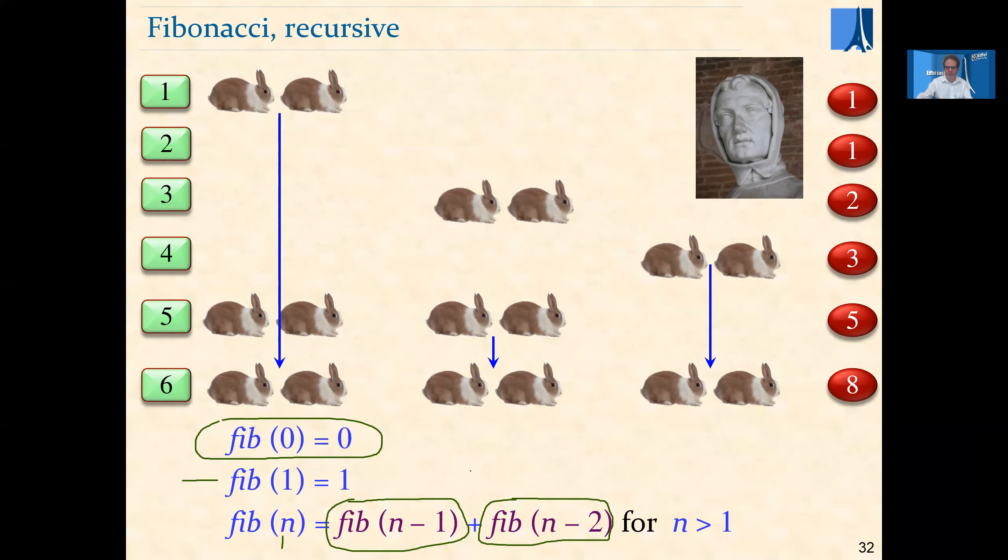It's easy to see that it's given by this formula. If for convenience we start at zero, at month zero we have zero pairs. At month one, we have one pair. These are the two initialization values. Then at month n for n greater than one, we still have all the pairs that we had in the previous month since rabbits never die, and we have one new pair for every fertile pair. That is to say for every pair that is at least two months old. So we have Fib of n equal to Fib of n minus one plus Fib of n minus two.